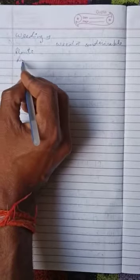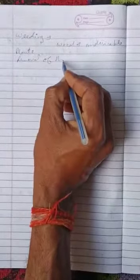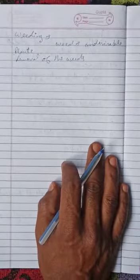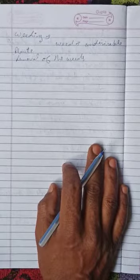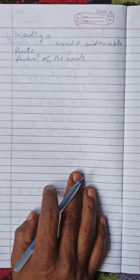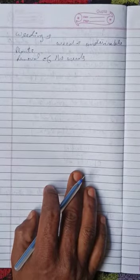Next is removal of the weeds. Removal of the weeds is known as weeding. जो removal of the weeds का process है, यानि के weeds को अलग करने का process है, उसे हम weeding कहते हैं.